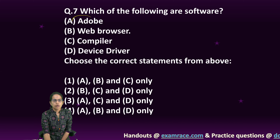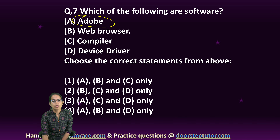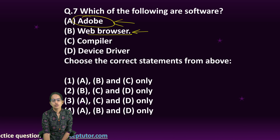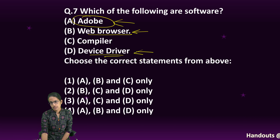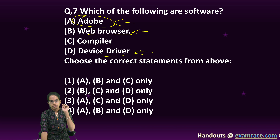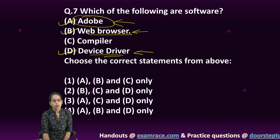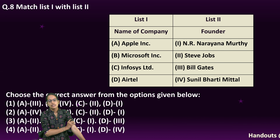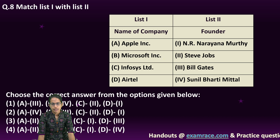Which of the following are software? Adobe is a software — it includes various programs like Photoshop and Premiere Pro. Web browsers like Chrome and Mozilla are all software. Device drivers — for example, when you install a printer or scanner, there is a device driver — that is also software. So options A, B, and D are all software.